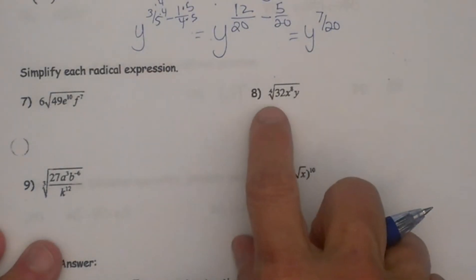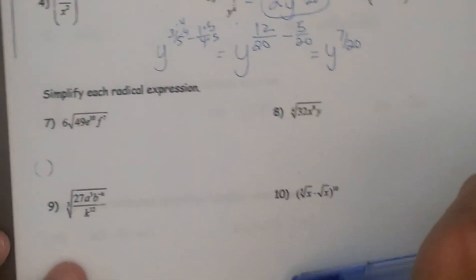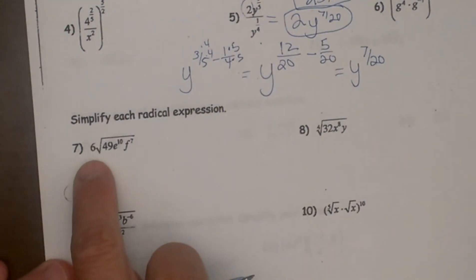Today we are going to look at how to simplify some radicals. Let's start with this first one over here. We have 6 times the square root of 49e to the 10th and f to the 7th.